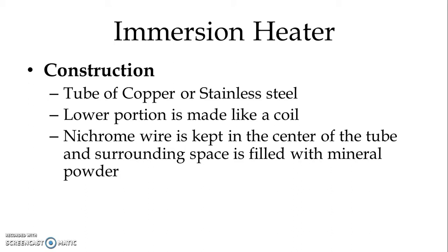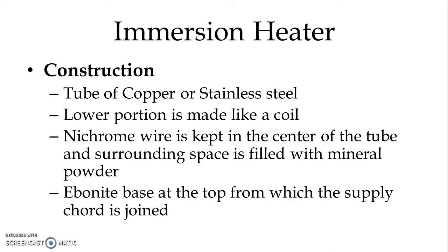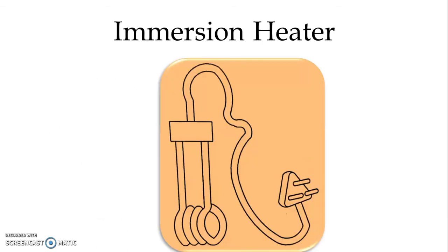The Nichrome wire has a very high resistivity and we pass current through it. As per the principle I²RT, heat is generated. We use one Ebonite base at the top from which the supply cord is joined. In the figure, we can see the Ebonite base connected to the power cord, and the tube — made of copper or stainless steel — with Nichrome wire inserted inside.